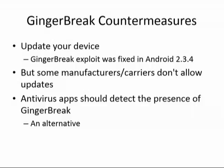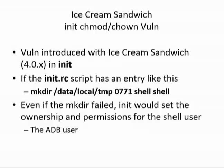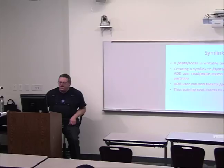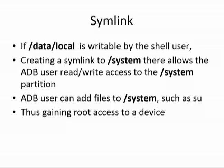In Android 4.0, they introduced a vulnerability in init so that you can have an entry that would make a directory, and even if it is unable to write the directory, it will still set the ownership and permissions to the shell user. So you can change your permissions, write to /data/local, put a link to /system, write into the system partition, and put in 'su' — the app that elevates your privileges. Once you've got it on the device, you can run it and become root.